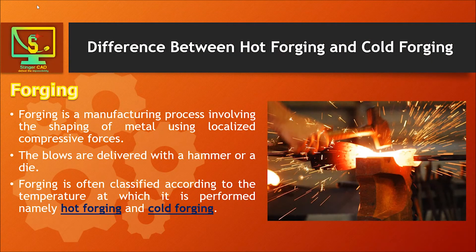Forging is a manufacturing process involving the shaping of metal using localized compressive forces. The blows are delivered with a hammer or a die. Forging is often classified according to the temperature at which it is performed, namely hot forging and cold forging.